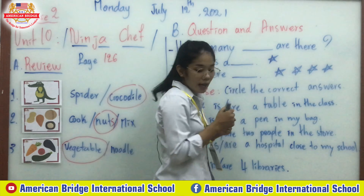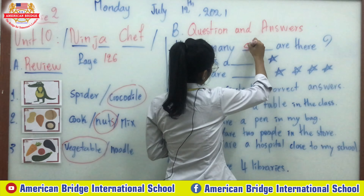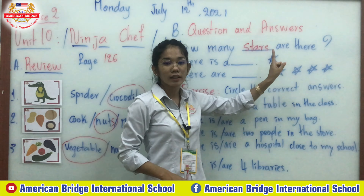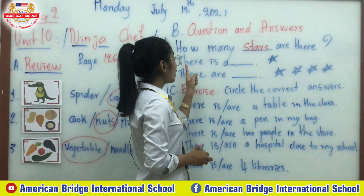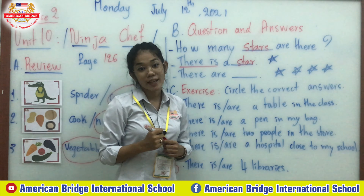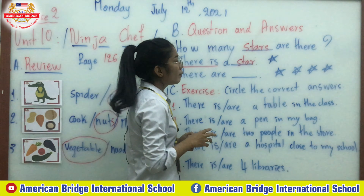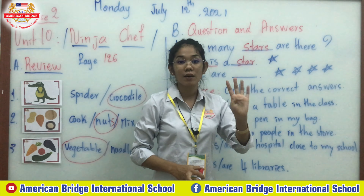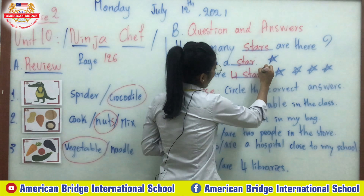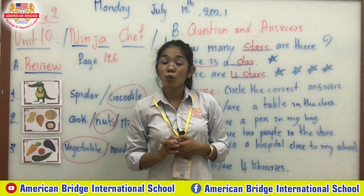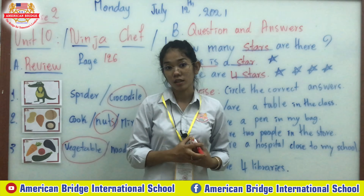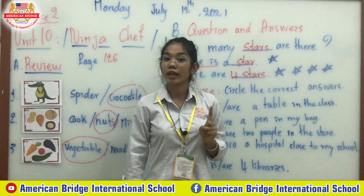Look at this example: how many stars are there? This star has only one, so we answer 'there is a star.' But look at this — there are four stars, so we answer 'there are four stars.' Notice the letter S is added because when a noun is in the plural form — more than one — we add S to the word. This one is singular, this one is plural.